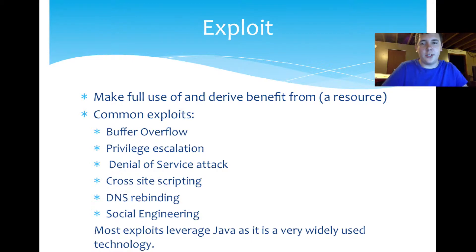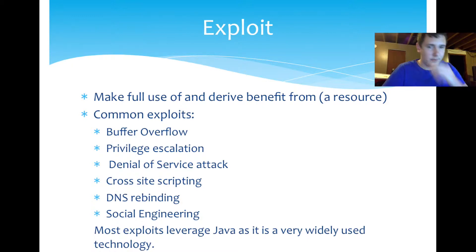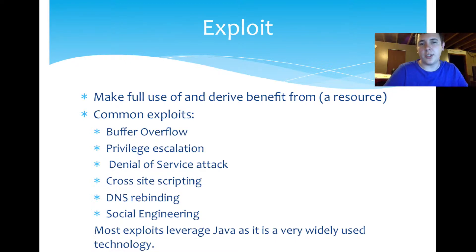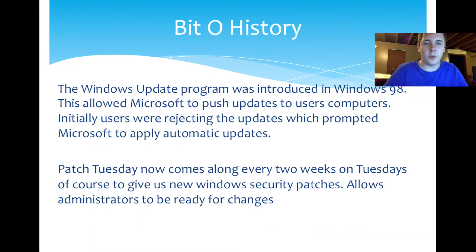An exploit by definition is to make full use of and derive benefit from a resource. In our case, it's going to be the Windows operating systems. Some common exploits are buffer overflow attacks, privilege escalation, denial of service attack, cross-site scripting, and DNS rebinding. Social engineering kind of falls into all of them because most attacks are going to use some form of social engineering to initiate. Most exploits in the wild are going to leverage Java, as it's probably the most widely used technology.